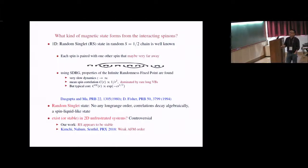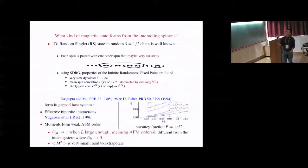Now the question is, does it exist or is it stable in 2D frustrated systems? The answer is controversial. There was a recent PRX paper by Kim-Chi, Ne-Hum and Sinto claiming that weak antiferromagnetic order will show in the end. But our work claims that random singlet state appears to be stable.